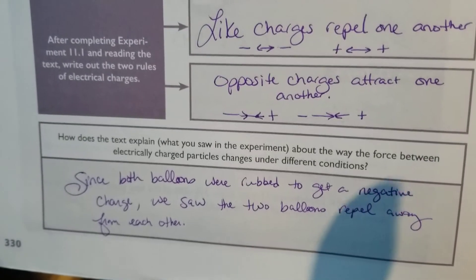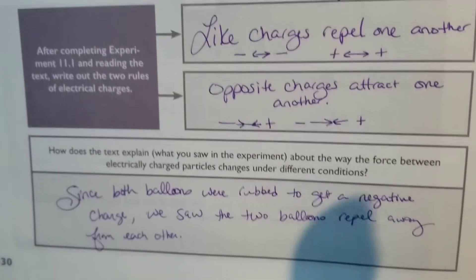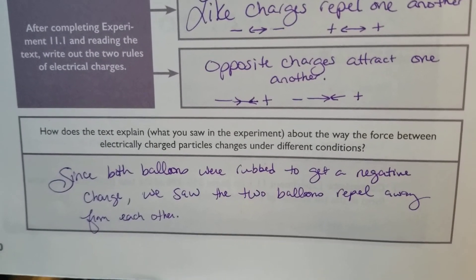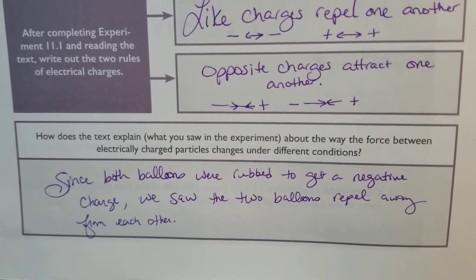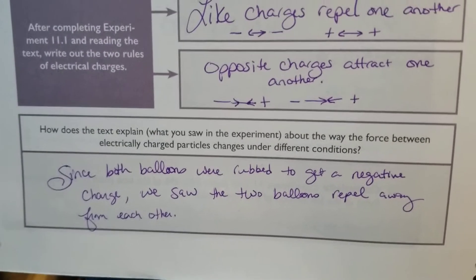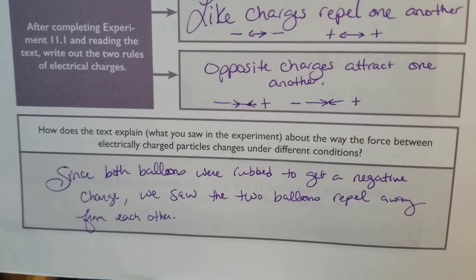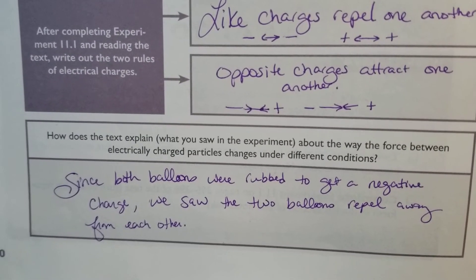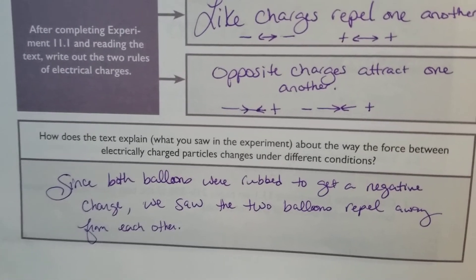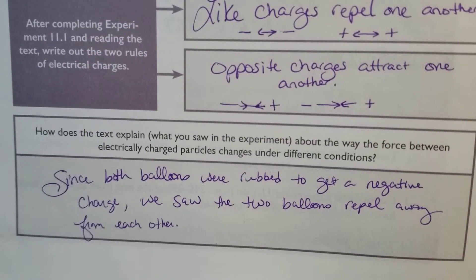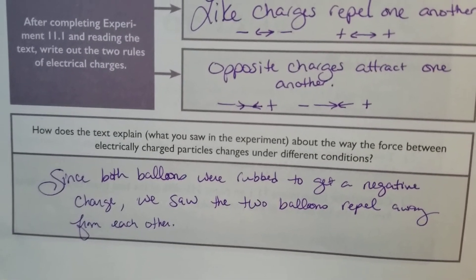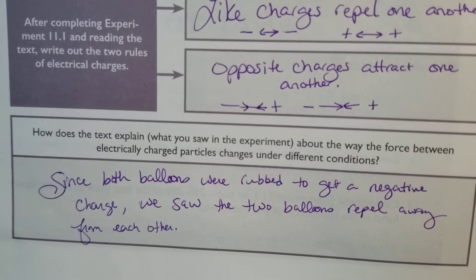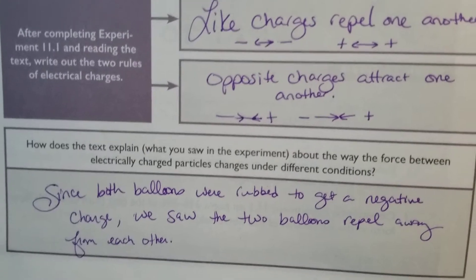How does the text explain what you saw in the experiment about the way the force between electrically charged particles changes under different conditions? We did an experiment in our Challenge 1 class where we rubbed balloons on our hair and had one hanging, and without even touching it, the two balloons repelled away from each other. Both balloons were rubbed on the hair, so they were both negatively charged and so we had that repelling going on.